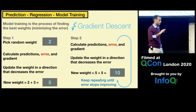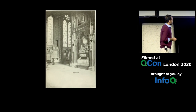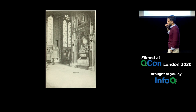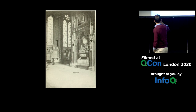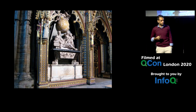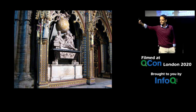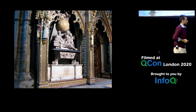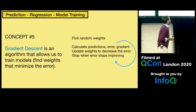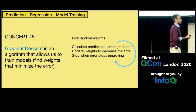We keep repeating until the error stops improving or crosses a certain threshold. This mathematical signal comes from calculus — from Isaac Newton, who also rests in Westminster Abbey, 300 meters from where we stand right now. Concept number five is model training: finding the right weights to allow the model to make better predictions, using this algorithm.